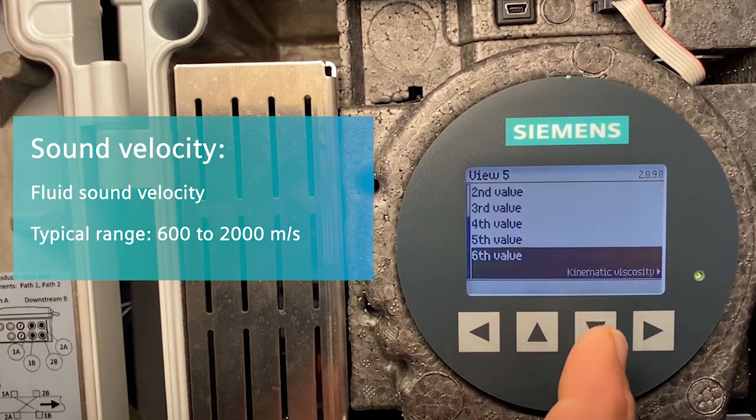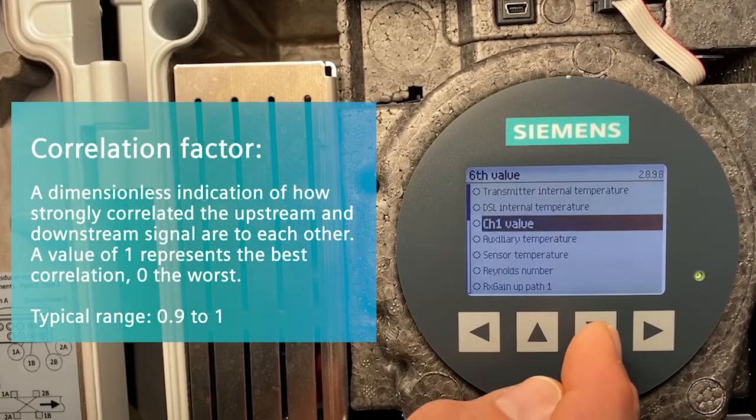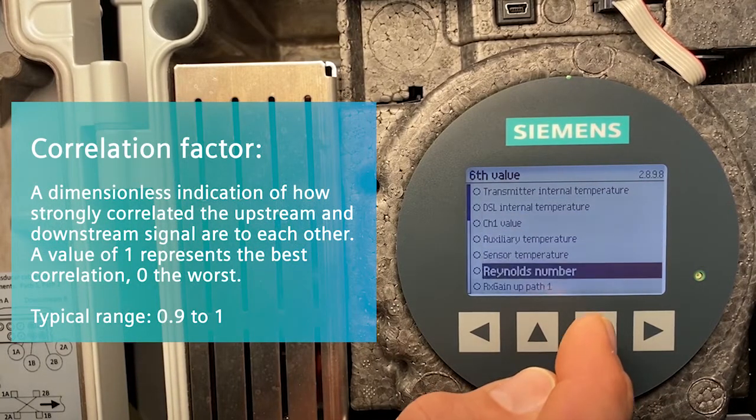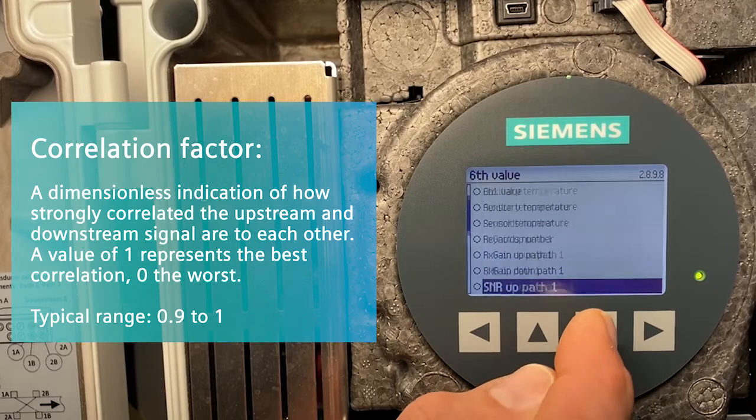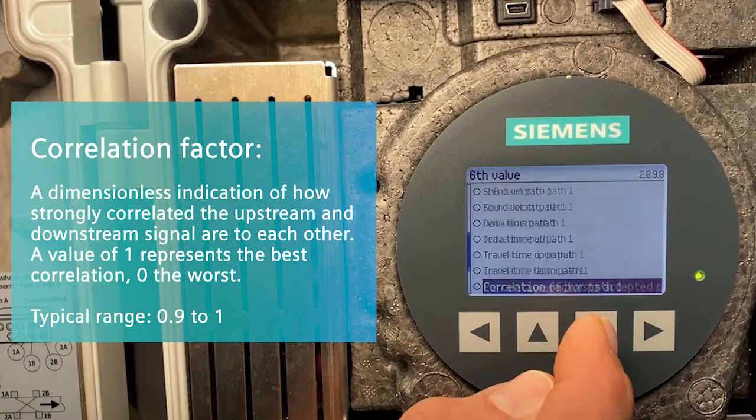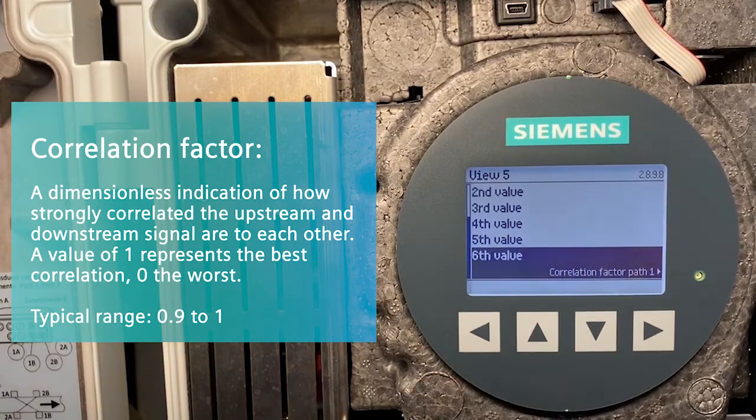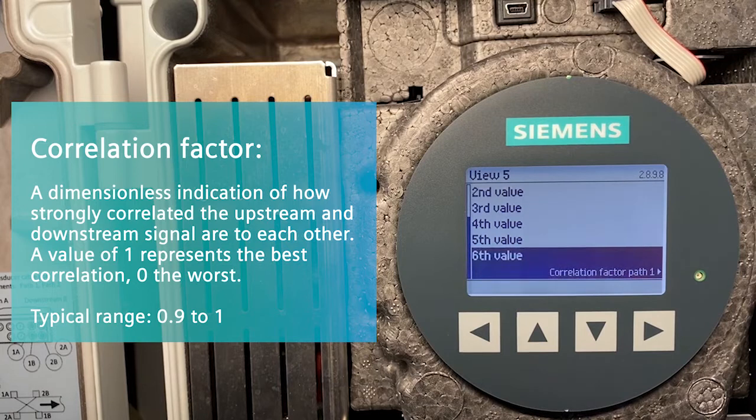Sixth value. I take correlation factor path 1. A value of 1 represents the best correlation. Zero at the worst. Now we have adjusted all six diagnostic values.